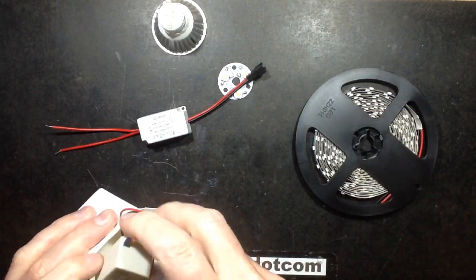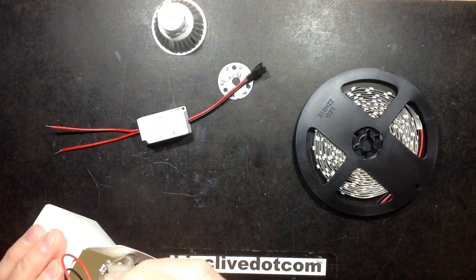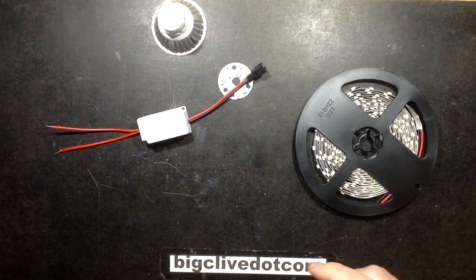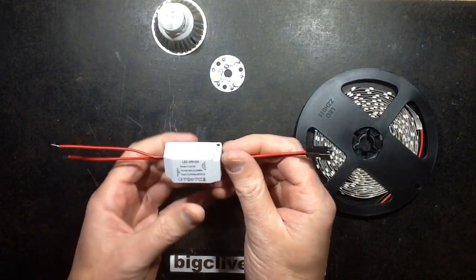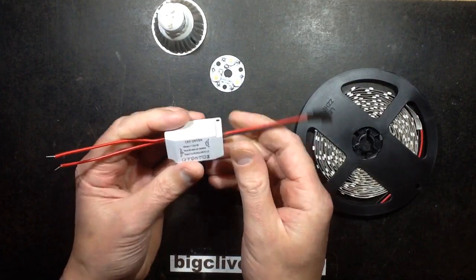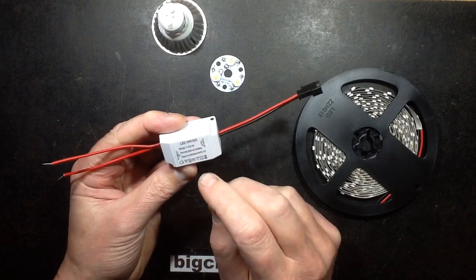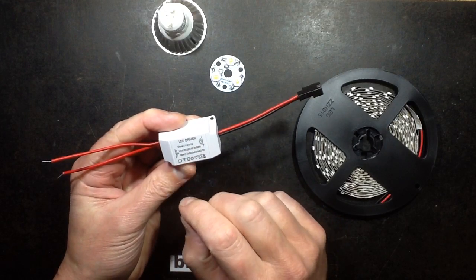So I got one of these separately on its own online because I had a thought. I've probably got loads of them knocking about the house, but I just thought I'd get another one. These things are designed to drive between 1 and 3 LEDs in series. That'll be roughly about 3 to 12 volts at a fixed current of 300 milliamps.